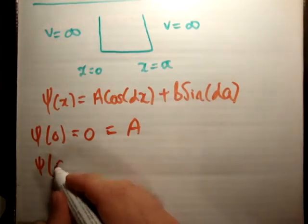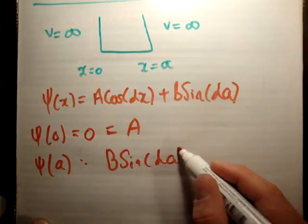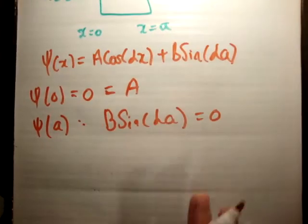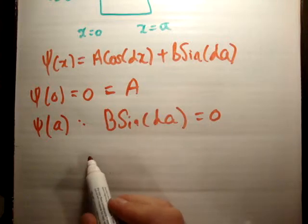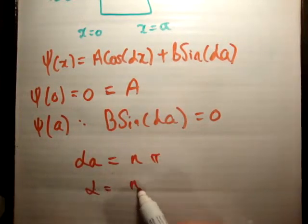Similarly we apply at a here and we're going to find that B times the sine of αa is equal to 0. Sine is equal to 0 at integer values of nπ, therefore αa is equal to nπ, therefore α is equal to nπ over a.